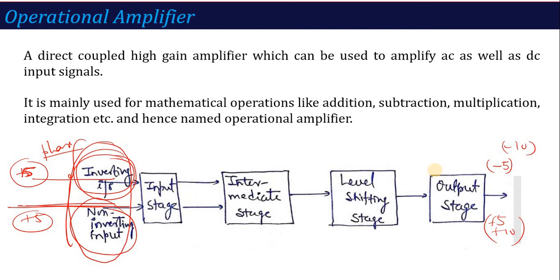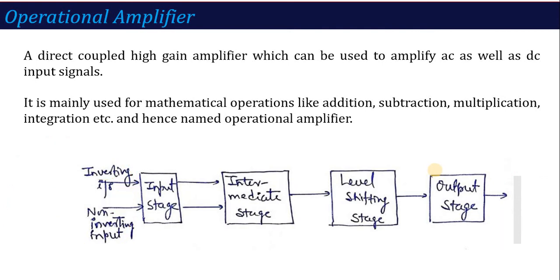We will see practical circuits later. As an introduction: the Operational Amplifier is an amplifier which amplifies AC as well as DC and also performs some mathematical operations — that is a simple definition. After that, the block diagram shows every stage's function. This block diagram is commonly a two-mark question: what is the requirement of the level shifting stage, why is it called a high gain amplifier, and what is the meaning of direct coupling — these are some of the questions that can appear in your paper.